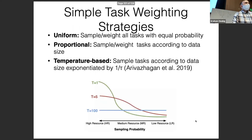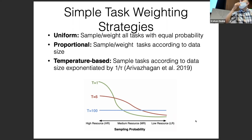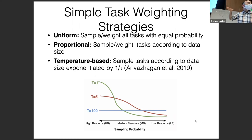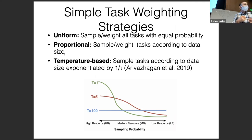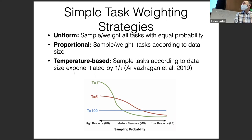Why use temperature-based strategies over uniform or proportional? Uniform has the problem that if one task has a very small data size like 500 examples versus 5 million examples for another task, you'll very quickly overfit on the 500 examples. If you do proportional, you'll spend the entirety of your time on the high-data task — 10,000 times more on the 5 million example task — so you'd never learn the low-frequency tasks. Temperature-based sampling balances between those two extremes.